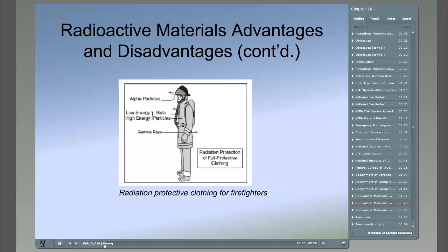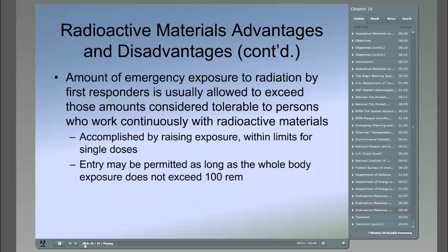Alpha particles will not penetrate PPE gear but bounce right off it, whereas beta particles mostly will bounce off it also. Unless you have high-yield beta particles from an explosion, they could pass into the PPE. In gamma rays, PPE doesn't stand a chance — gamma rays will go right through it. The amount of emergency exposure to radiation by first responders is usually allowed to exceed those amounts considered tolerable to persons who work continuously with radioactive materials. This is accomplished by raising the exposure within the limits for a single dose, and is considered acceptable as long as certain limits are not exceeded.